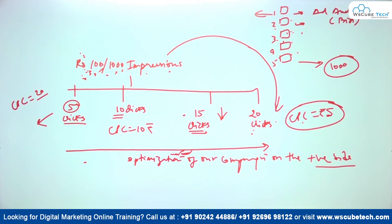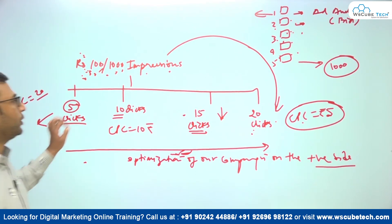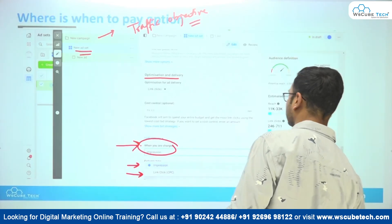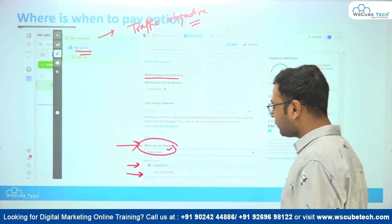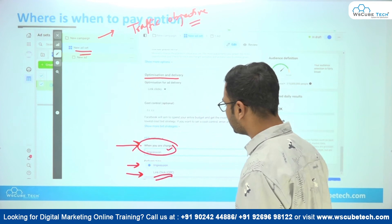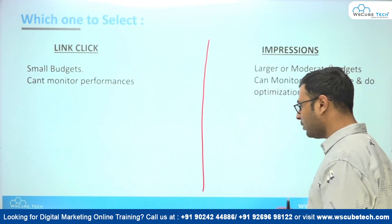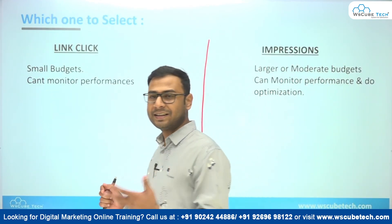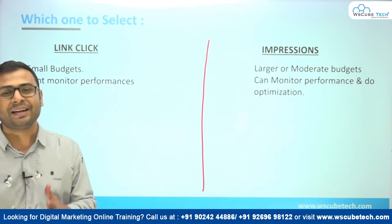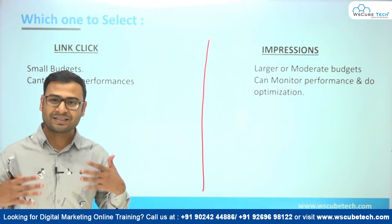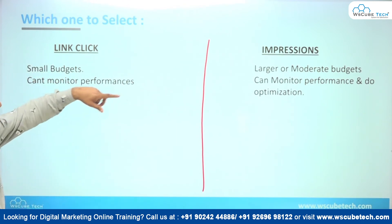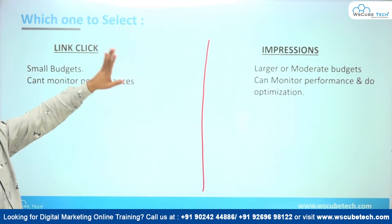When you select Impressions as your 'When You Are Charged' option, you need to focus on getting higher and relevant clicks — that's what makes this option beneficial. Now let's talk about Link Clicks. It looks very attractive to advertisers because you only pay when you get a click — otherwise you don't pay anything to Facebook. But it doesn't actually work that simply.